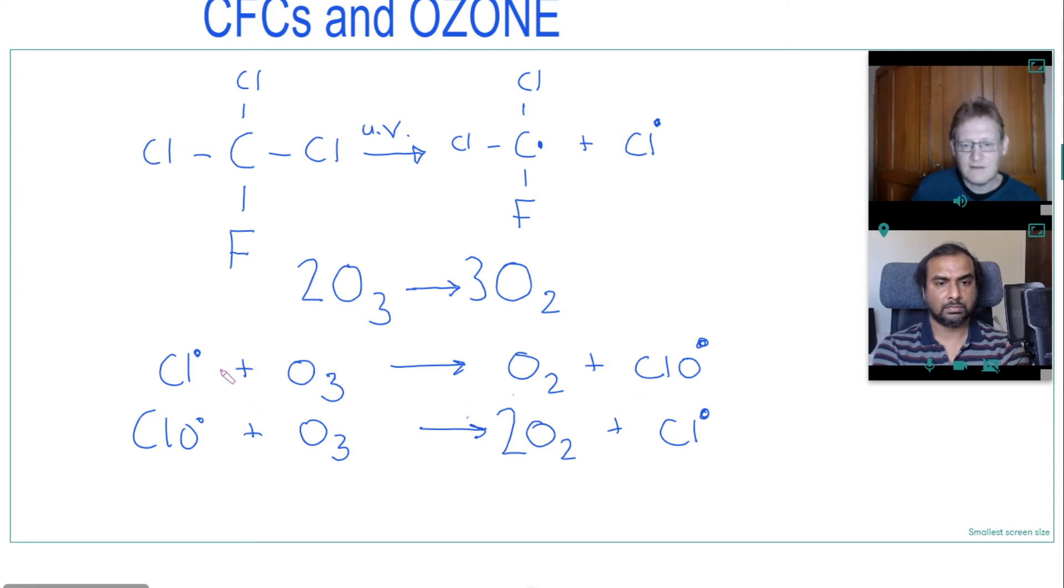And if we ignore the free radicals here because they cancel each other out in the overall mechanism, then on the left hand side with two ozones and on the right hand side with three oxygens, which is what we're expecting to happen from the overall equation.